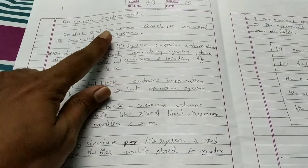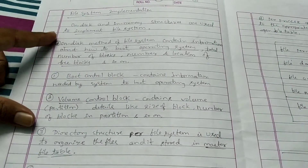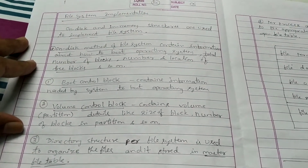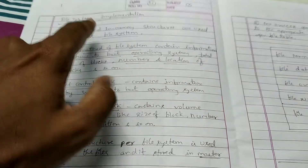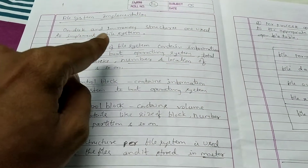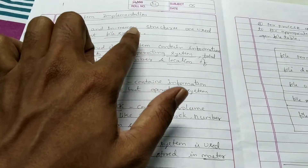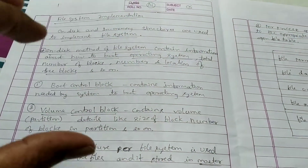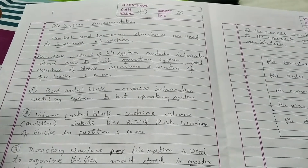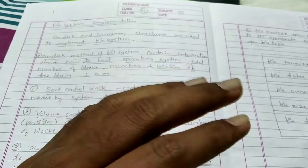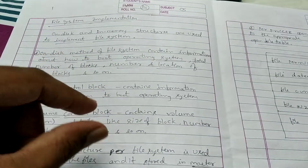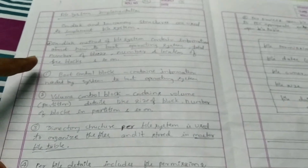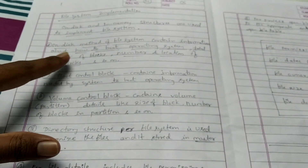Next is file system implementation — how you are going to implement the various file systems in your system. There are two ways to implement a file system: first is on-disk implementation, and second is in-memory implementation. On-disk refers to how you implement it on a secondary storage device; in-memory refers to how you implement files and directories inside a primary storage device, called the in-memory file system structure.